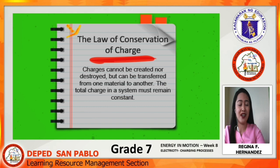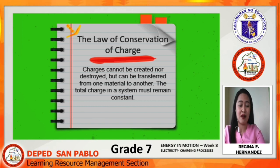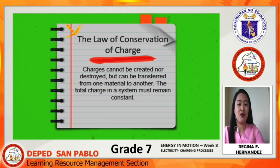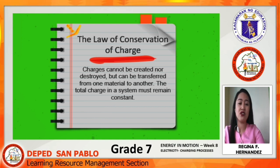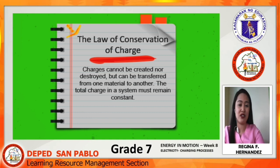We are done learning about the different types of charging processes. Always remember: charges cannot be created nor destroyed, but can be transferred from one material to another. The total charge in a system must remain constant. That is the law of conservation of charge.